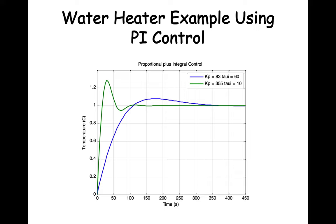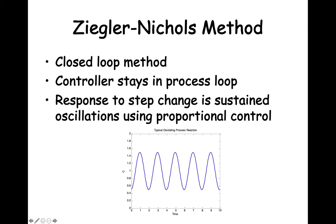So the Cohen-Kuhl method produced good process control results. The other method for controller tuning is the Ziegler-Nichols method. This method is sometimes called the closed loop method because the controller stays in the process loop. The controller is set up to run using proportional control only, and the process is subjected to small step changes to produce sustained oscillations in the response.